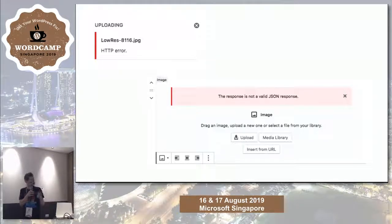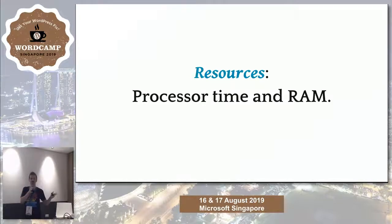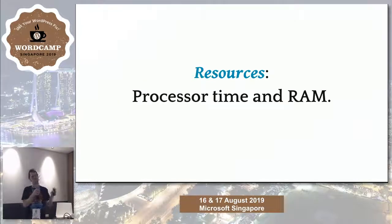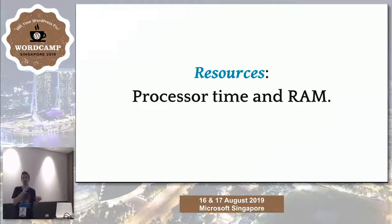When we talk about resources, we're mainly talking about processor time and memory. One thing that's more difficult with GD when resizing images is that it requires the entire image be uncompressed in memory while doing all its operations. Imagick does not. So if your host supports Imagick, especially on shared hosting, you're a lot more likely to have the request complete successfully. As images get larger — now we're seeing phone images reach what used to be professional camera resolutions — it becomes more likely you might run out of resources.